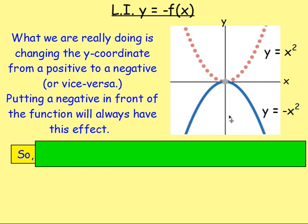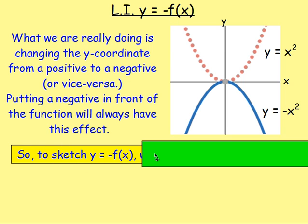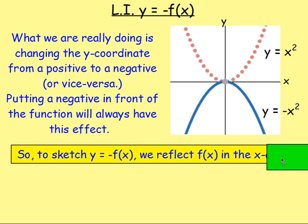It will always turn the smiley face into a sad face, and vice versa. So how then would you graph y equals negative f of x, if you knew f of x? Well, to sketch y equals negative f of x, what you do is you just reflect the graph of f of x in the x axis. So you want to treat this x axis just like a line of symmetry.